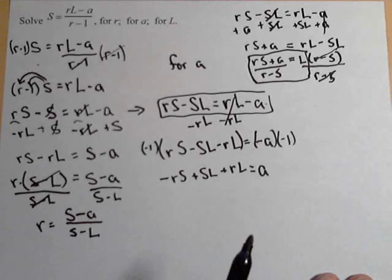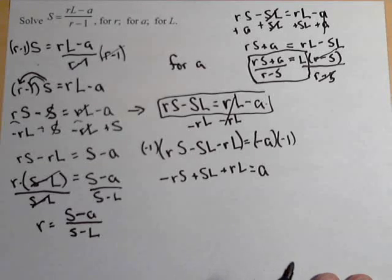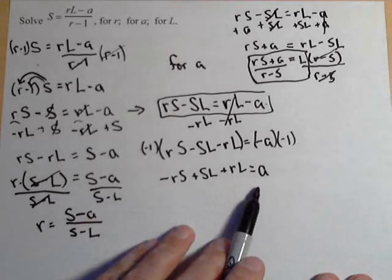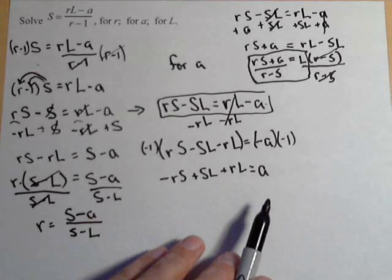So notice that there were some similarities in how we solve for these. In fact, they all involve the same first two steps, which is then deciding which variable we want to solve for, getting that variable isolated on the side, and then either factoring and dividing, or in the case of A, we didn't have to factor and divide because there's only one.